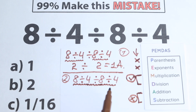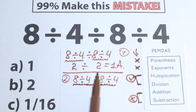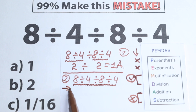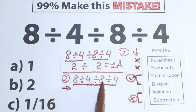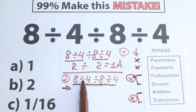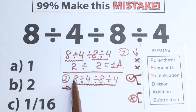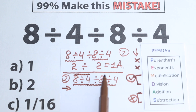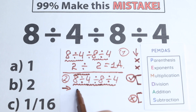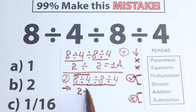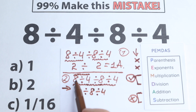When you have a long expression with multiplication and division, you must go from left to right. We have three division signs. The first one from the left is between 8 and 4, so our first step is 8 divided by 4 equals 2. Now the expression becomes 2 divided by 8 divided by 4.